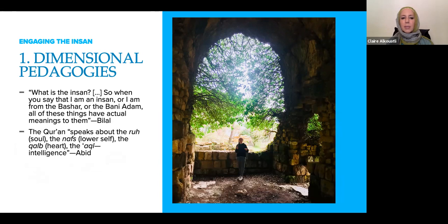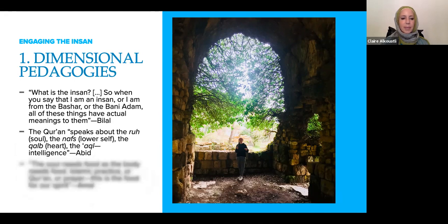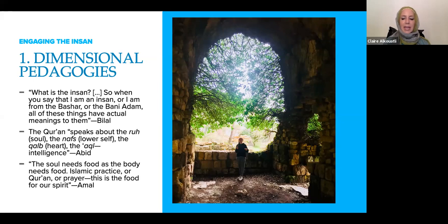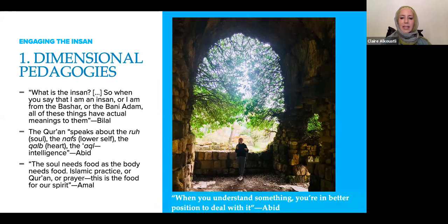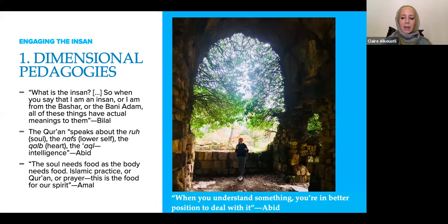What we call ourselves has implications. Abid, another educator, described how the Quran speaks about the ruh (the soul), the nafs (the lower self), the kelb, and the akal (intelligence). Within the Quran, we have these distinct domains of the human being. Amal said: the soul needs food as the body needs food — Islamic practice, Quran, or prayer is food for our spirit. All of these educators indicate that there are unique dimensions to the human being that require particular pedagogies to engage them. Abid said: when you understand something, you're in a better position to deal with it — a wake-up call for us as Muslim educators to think about the dimensions of the children we're educating.